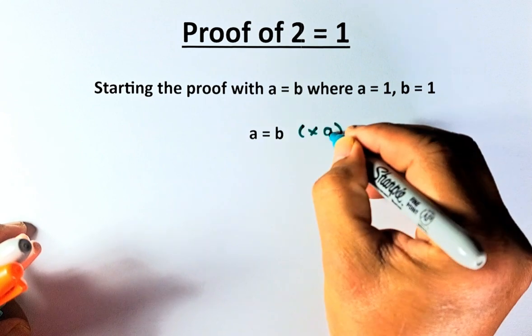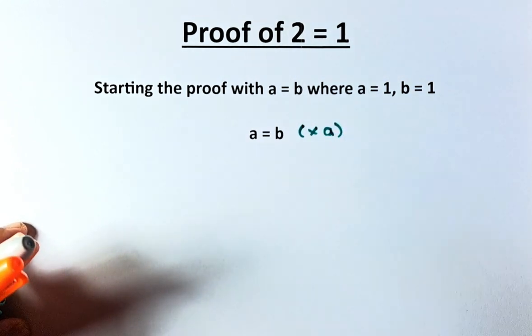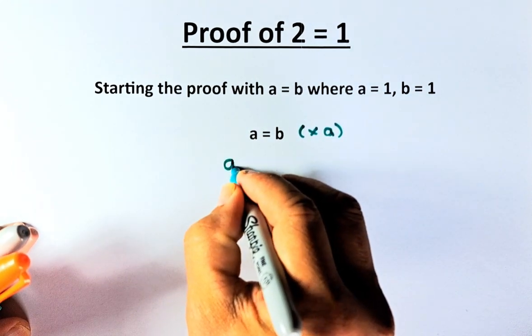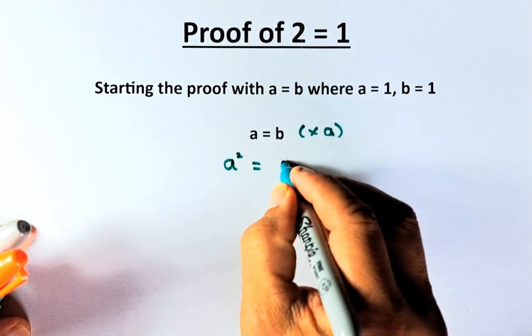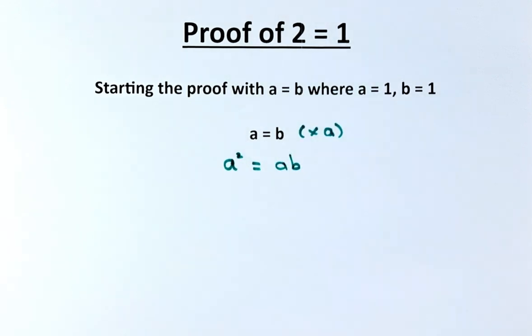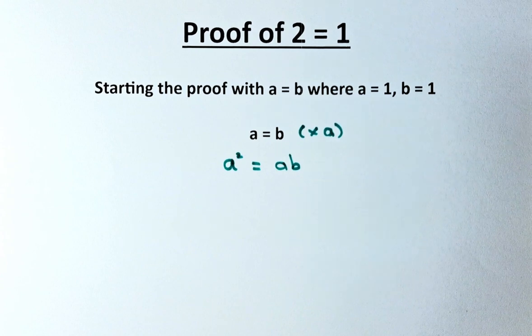Multiply by A, that equation now becomes A squared equals to AB. So that is step number 1.